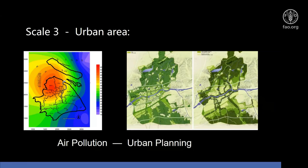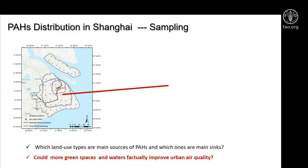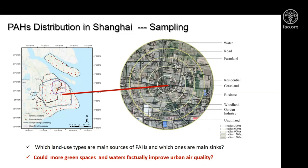The third scale covers the whole urban area. If we know how air pollution is distributed, then we can determine what to do in urban forestry planning and design. We take Shanghai's aerial PAH pollution as an example. We sampled 84 sites all over Shanghai, determined the PAH concentrations, and recorded the land use type of every sampling site in different buffer zones — including water, road, farmland, residential, grassland, business, and woodland. The proportion of each land use type was calculated and associated with pollutant concentrations.